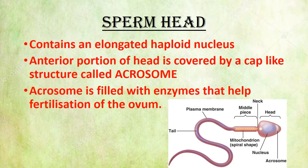What is the sperm head? The sperm head contains an elongated haploid nucleus. The anterior portion of the head region is covered by a cap-like structure that is known as the acrosome.